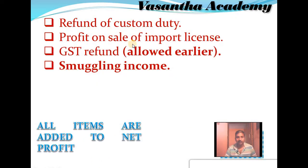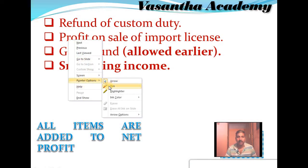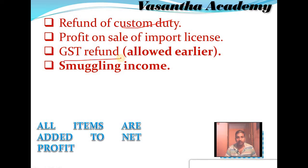Next, refund of custom duty and GST refund — both treatments are the same. It means that any excess tax amount paid by the proprietor to the tax department is refunded. For example, the actual tax is 1 lakh but the proprietor paid 2 lakhs, so 1 lakh is refunded by the government. This 1 lakh is considered as business income, since GST and custom duty are business taxes.